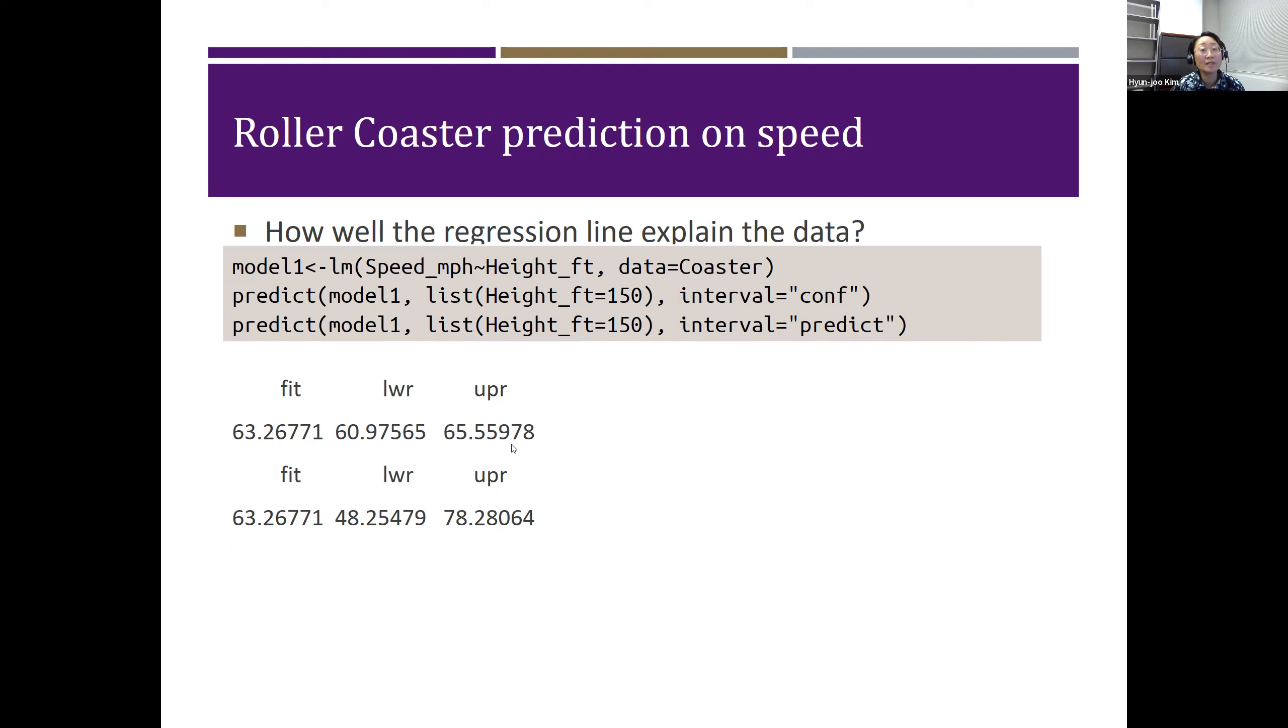We can say we are 95% confident that the mean maximum speed of the 150 maximum height roller coaster is between 60.97565 and 65.55978.